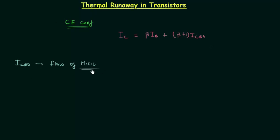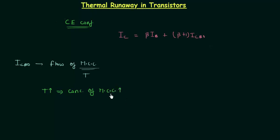The minority charge carriers depend only on the temperature. So if we increase the temperature, the concentration of minority charge carriers will also increase, and this will increase the reverse saturation current ICBO.